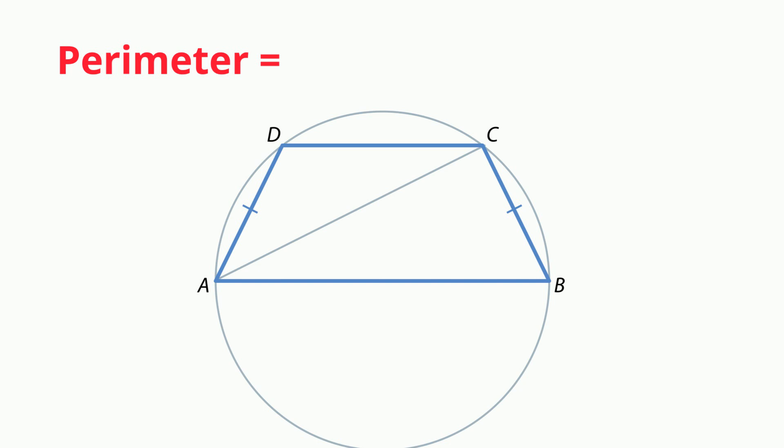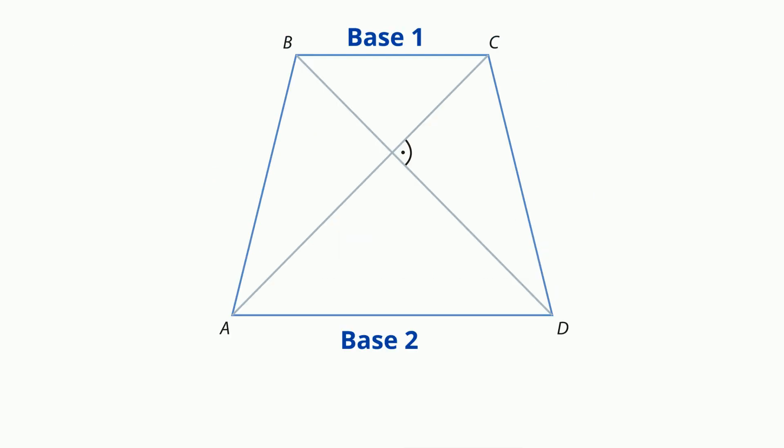In order to find the perimeter of an isosceles trapezoid, add the length of all sides. The area is equal to the average of the two bases times the height.